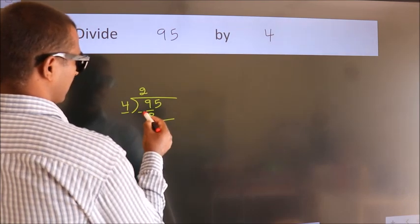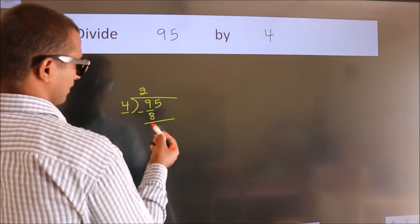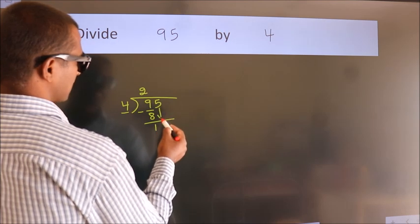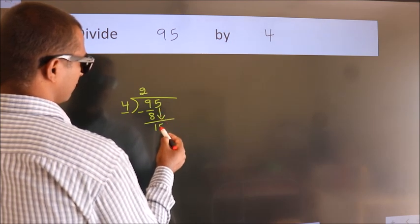Now, we should subtract. We get 1. After this, bring down the beside number. So, 5 down.